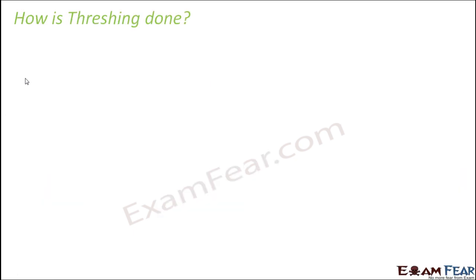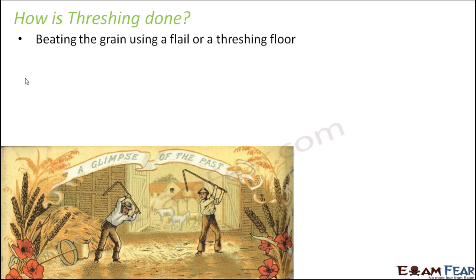You cannot manually pluck seeds one by one, so there has to be a faster process. Threshing is done manually by beating the grain using a flail or on a threshing floor. A flail is an agricultural tool used for threshing — to separate grains from their husks. With this stick or flail, they beat the stocks, and the grains get separated since they are not strongly attached. This is often done on a threshing floor — a space reserved for threshing.